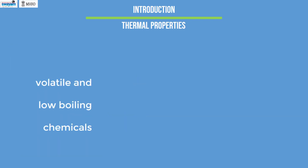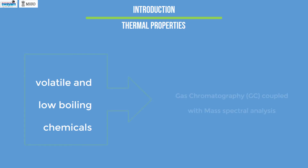The volatile and low boiling chemicals derived from biomass can be identified with the help of gas chromatography, often coupled with mass spectral analysis.